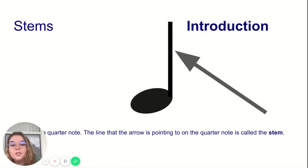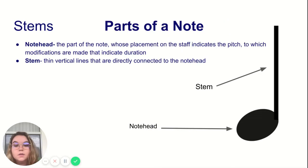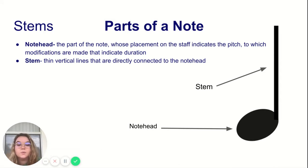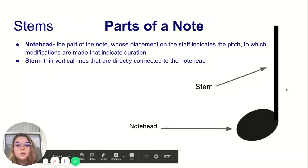In the image on the screen of a quarter note, the arrow is pointing to the stem. In this image, there are two parts labeled: the note head, which is the part of the note whose placement on the staff indicates the pitch to which modifications are made that indicate duration, and the stem, which is the thin vertical line that is directly connected to the note head.